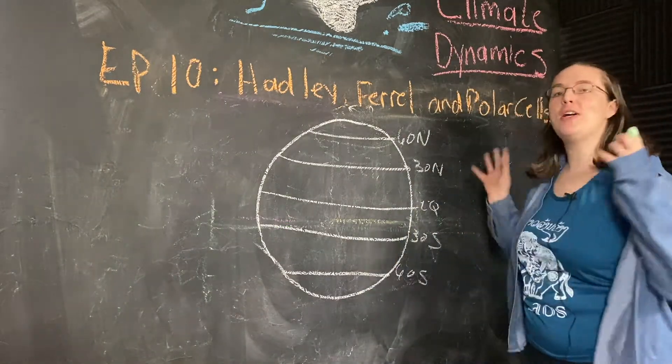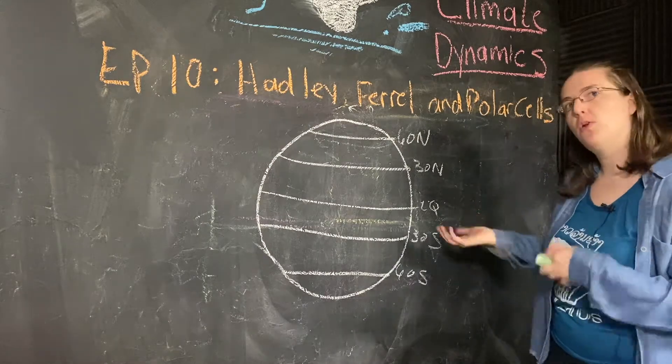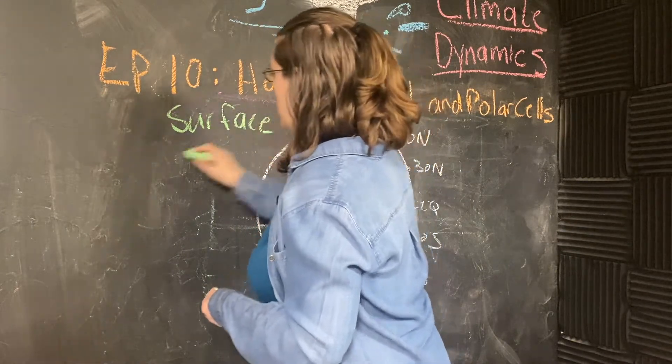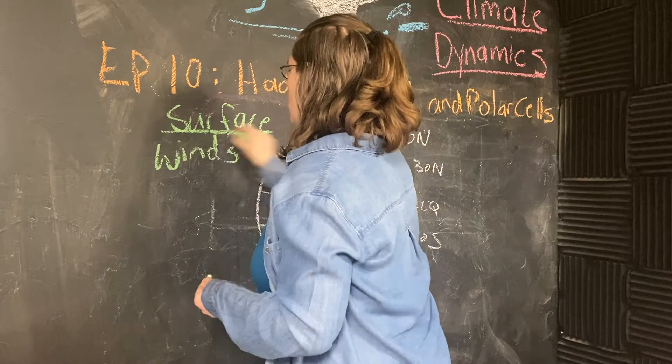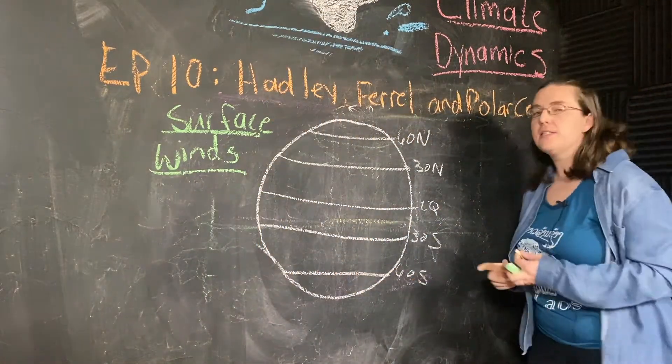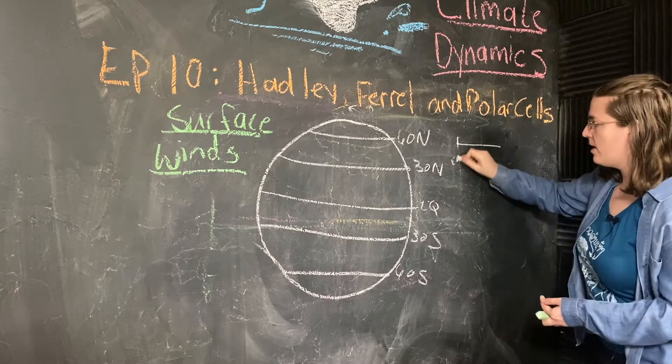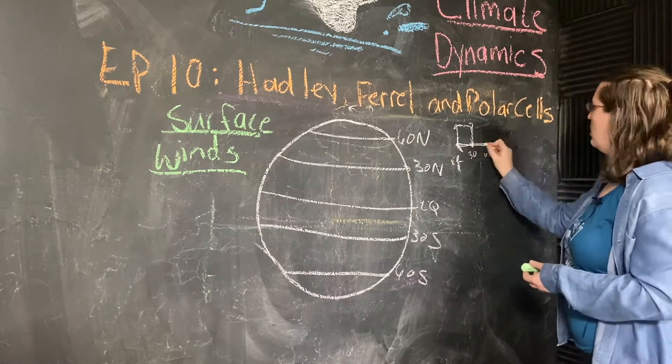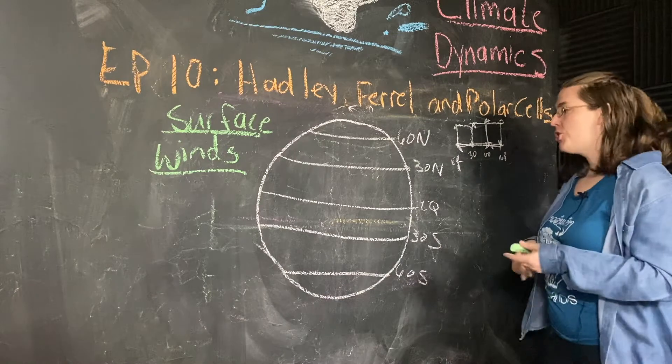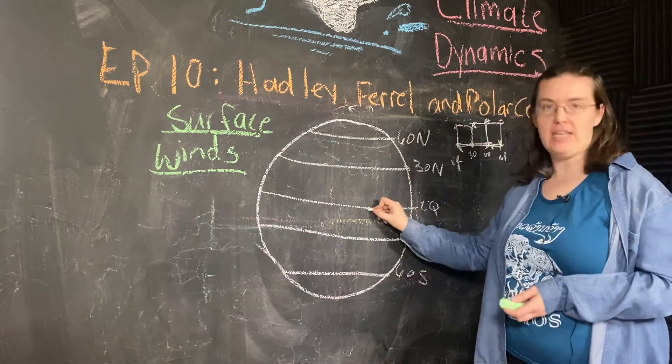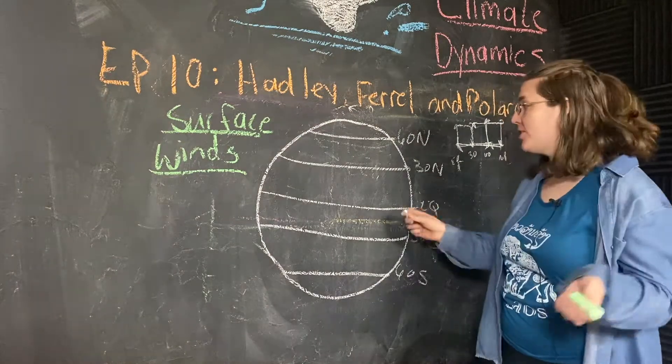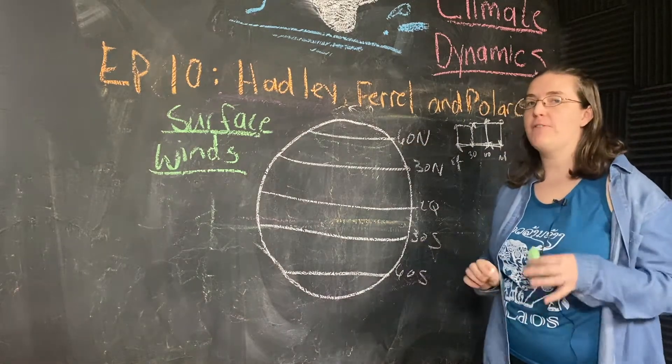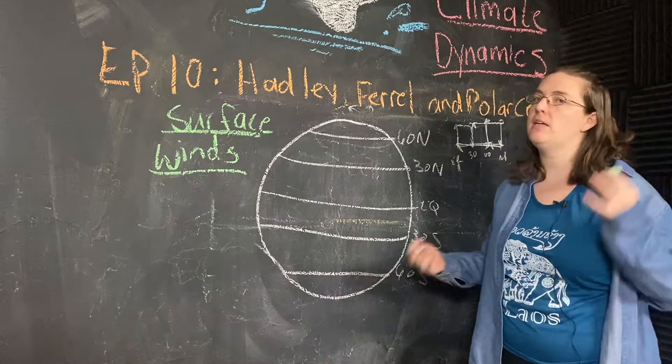Okay team. So let's talk about what surface winds we get because of those three cells, our Hadley, Polar, and Ferrel cells. Surface winds. As a little reminder, here's our equator, here's the north pole. This is 30, 60. Because of the Hadley cell, surface winds are going to be going from 30 towards the equator. The air travels along the surface back towards it.